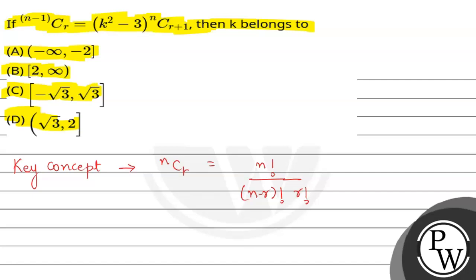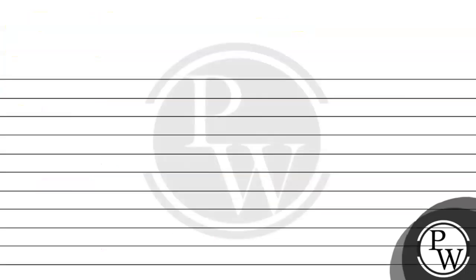One more thing — if we have a, c, b, then the range of b is from 0 to a.